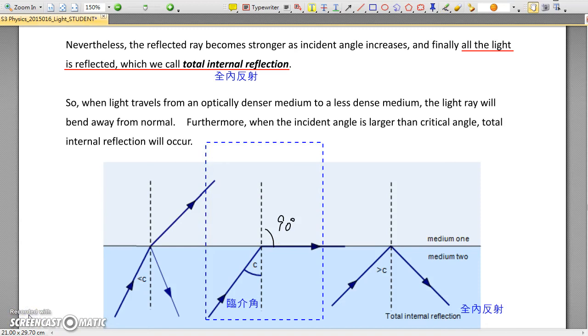By Snell's law, we may set up the equation. The refractive index of glass equals sine the angle in air over sine the angle in glass. And so we may have this result.